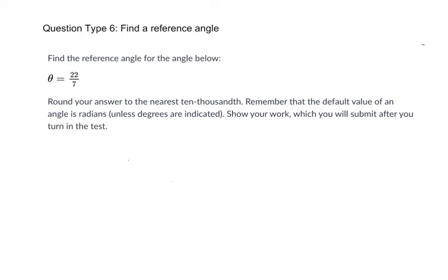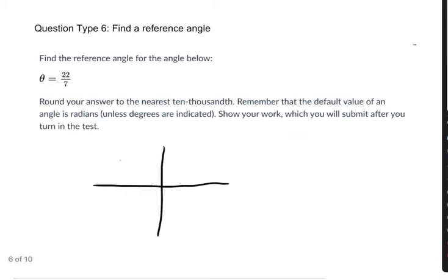Okay, so reference angles are, what are they? They're acute angles, and they're always between the terminal side of whatever angle you have and the x-axis. So our angle right here is 22/7 radians.